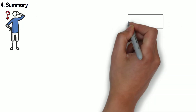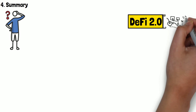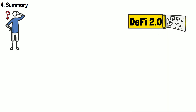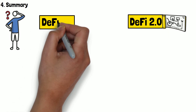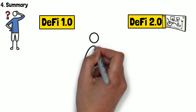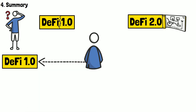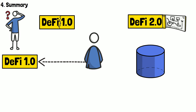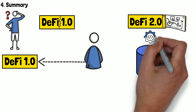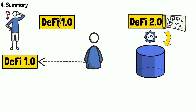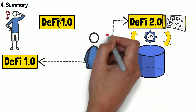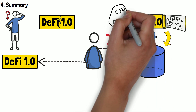DeFi 2.0 is a complex subject, but to recap: the main message is that traditional DeFi 1.0 suffers from liquidity providers leaving projects for other, more promising opportunities at almost any time. DeFi 2.0 projects aim to solve this by implementing special, complex mechanisms that allow them to become the holders of their own liquidity. In many cases, this results in projects not relying on assets staked by other third-party investors.